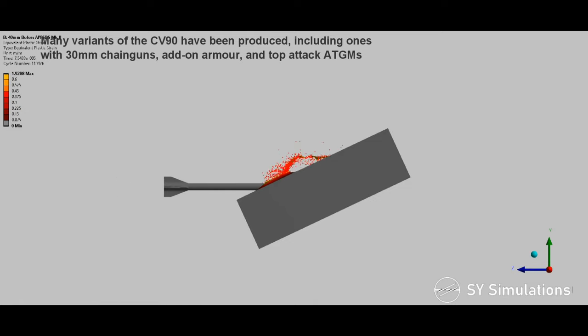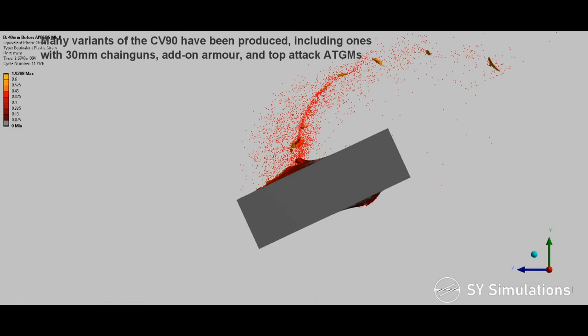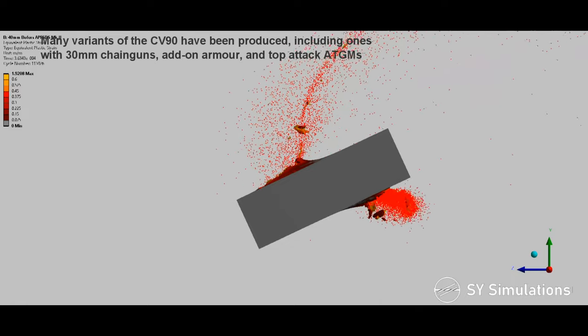Many variants of the CV-90 have been produced, including ones with 30mm chainguns, add-on armor, and top attack anti-tank guided missiles.